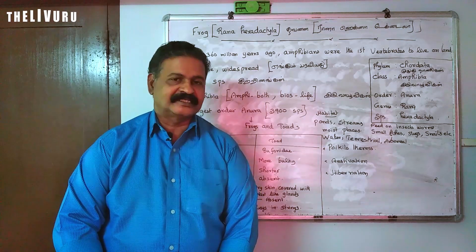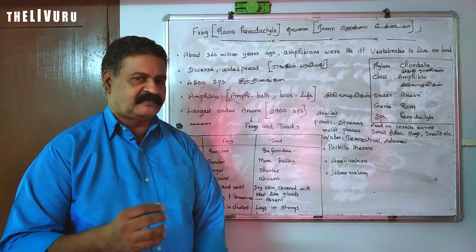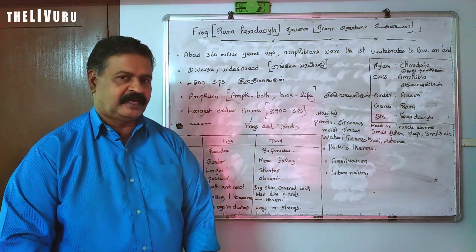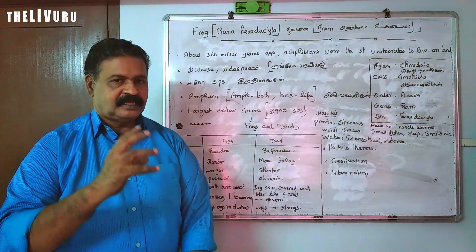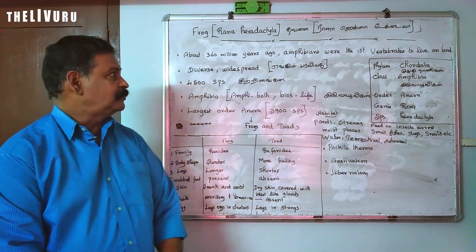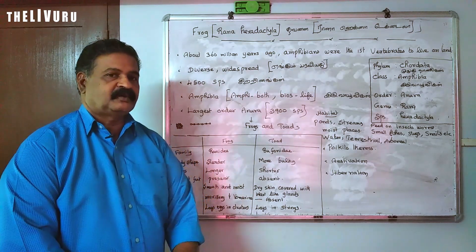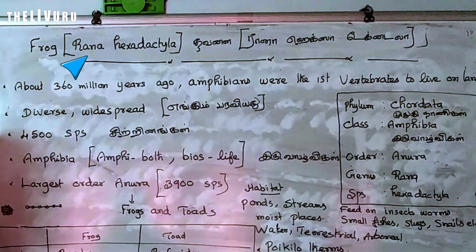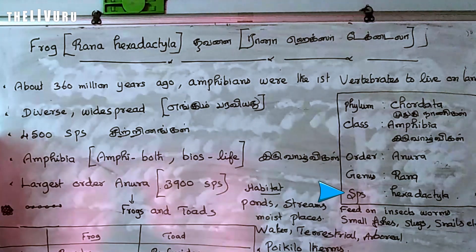We are going to discuss the introduction of morphology of frog. The scientific name of this frog is Rana hexadactyla. Rana is the genus name and hexadactyla is the species name.